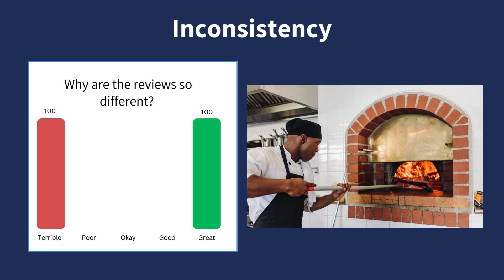The third item is inconsistency. Inconsistency is when there are differences that make it difficult to come to an overall conclusion. Here's an example where the ratings are all great or all terrible. There could be a good reason for the differences — for example, maybe two different chefs are working at the restaurant, and one is great and the other is terrible. However, looking at these ratings without an explanation would make it difficult to interpret this information. This is inconsistency.